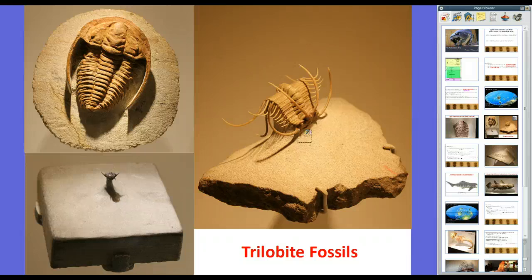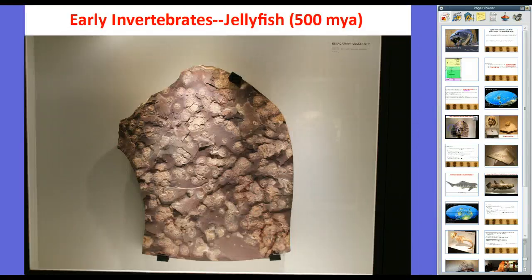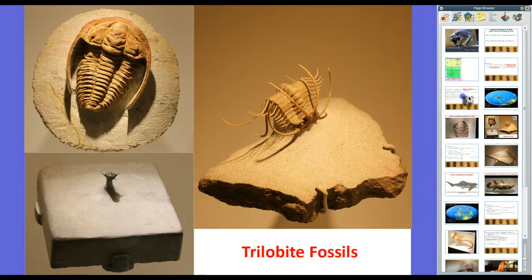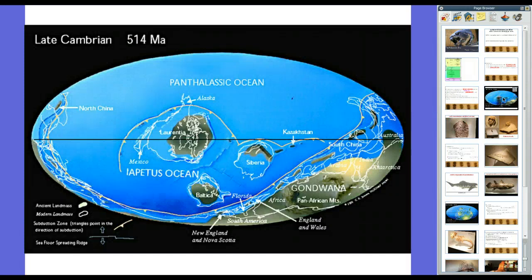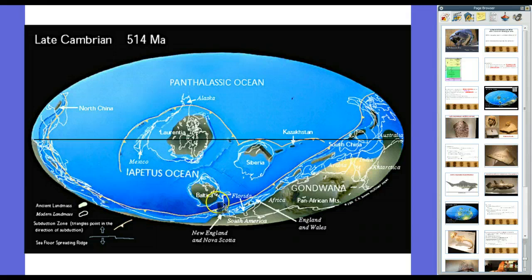Those organisms evolved from simple jellyfish with no exoskeletons to trilobites with exoskeletons. The planet looked a lot different back then — especially the shapes of the continents. This is the late Cambrian Period, about 514 million years ago. Alaska is here, Louisiana is way down here, a piece of Siberia is here, and here's part of Europe. Most of the Earth was covered in water, and most of the land was down by the poles, particularly the South Pole.